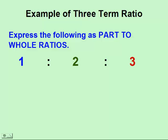Let's express each one of these three parts as a part-to-whole ratio. The whole, in this case, if we have one, two, and three, would be out of six.